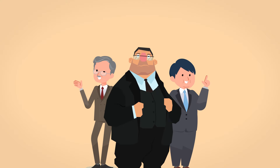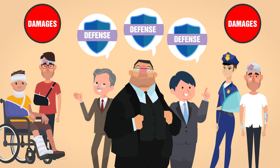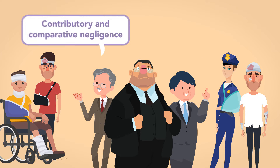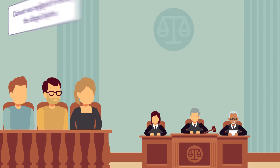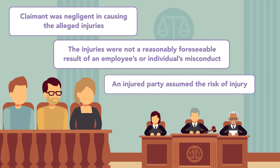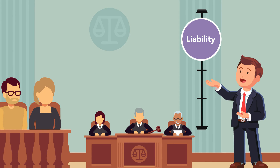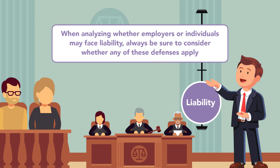Conclusion: Although employers and individuals may face vicarious liability for employees' or others' misconduct, they may assert several defenses that reduce and possibly eliminate the damages an injured party can recover. Contributory and comparative negligence, causation, and assumption of risk are among the more commonly asserted defenses. If a court or jury determines that a claimant was negligent in causing the alleged injuries, that the injuries were not a reasonably foreseeable result of an employee's or individual's misconduct, or that an injured party assumed the risk of injury, an employer's or individual's liability may be substantially, if not entirely, reduced. When analyzing whether employers or individuals may face liability, always be sure to consider whether any of these defenses apply.